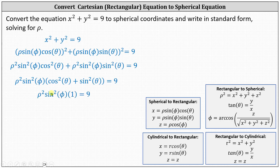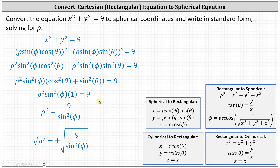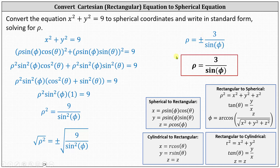And now we'll divide both sides by sine squared phi, giving us rho squared equals nine divided by sine squared phi. And once again, we take the square root of both sides of the equation, which gives us rho equals plus or minus three divided by sine phi. And again, using the positive value, we have rho equals three divided by sine phi.